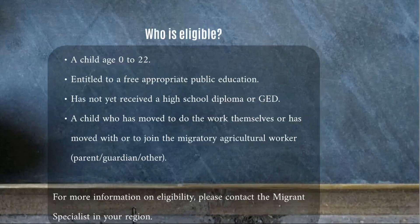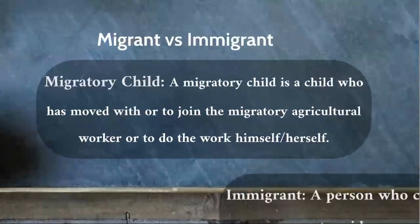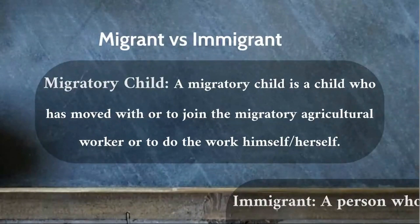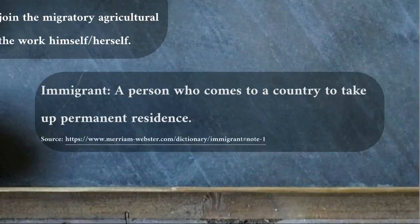What is the difference between a migrant versus an immigrant? A migratory child is a child who has moved with or to join the migratory agriculture worker, or to do the work themselves. An immigrant is a person who comes to the country to take up permanent residence.